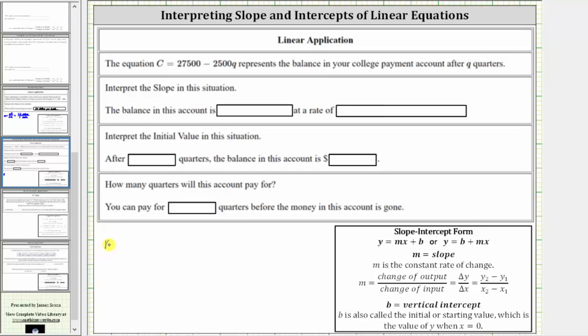In this situation, the slope M is equal to the change in C, which represents the change in the account balance in dollars, divided by the change in Q, which represents the change in quarters. And for our equation, the slope is the coefficient of Q, not the coefficient of X.